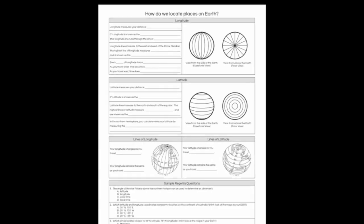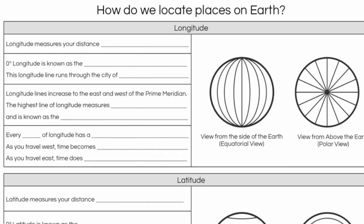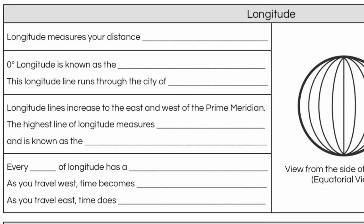Grab your sheets, and let's take a look at longitude. Longitude lines measure your distance to the east or west on the earth. Zero degrees longitude is known as the prime meridian, and this longitude runs through a city called Greenwich in England, or in the UK.